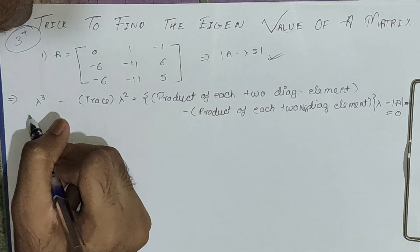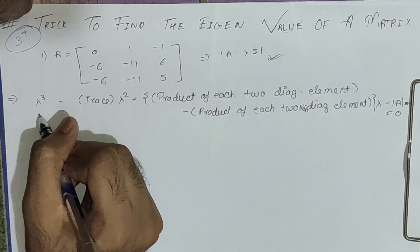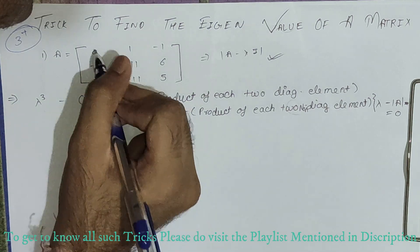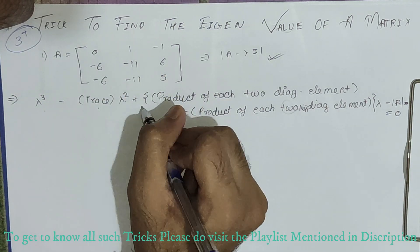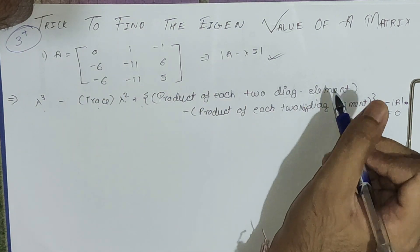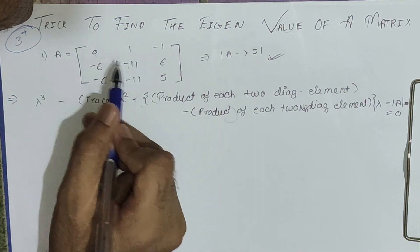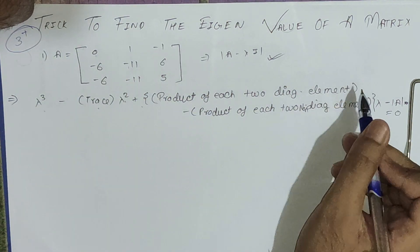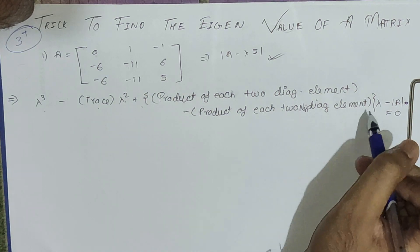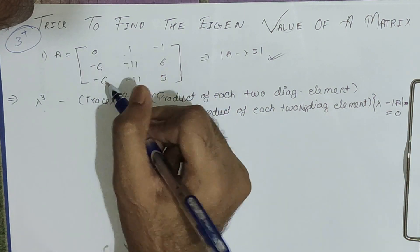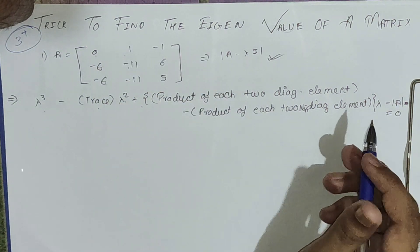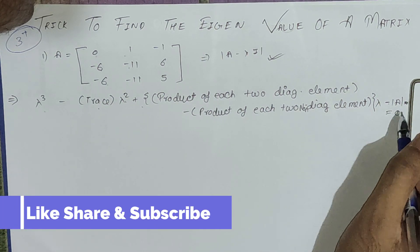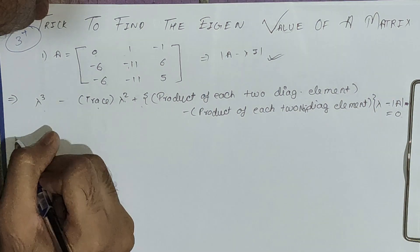The trick uses the formula: lambda cubed minus (trace) times lambda squared plus (sum of products of each pair of diagonal elements) times lambda, then minus the product of each pair of non-diagonal elements — like minus 6 into 1, minus 6 into minus 1, minus 11 into 6 — then minus the determinant equals zero.